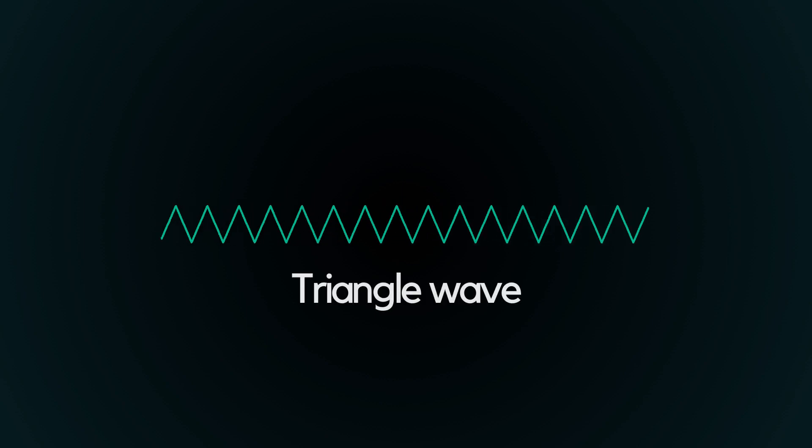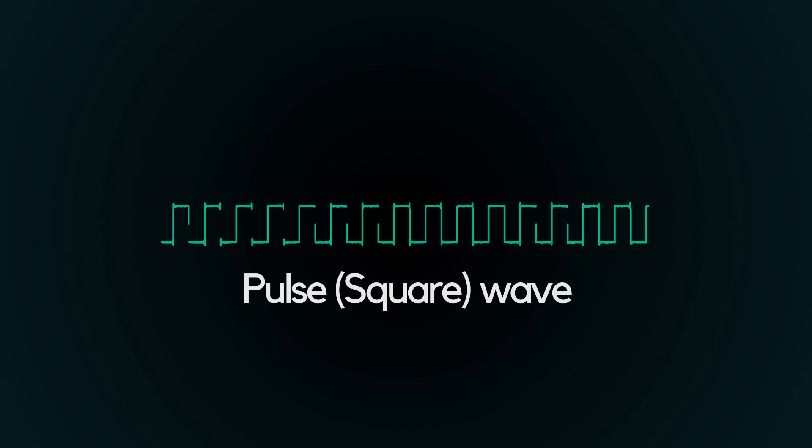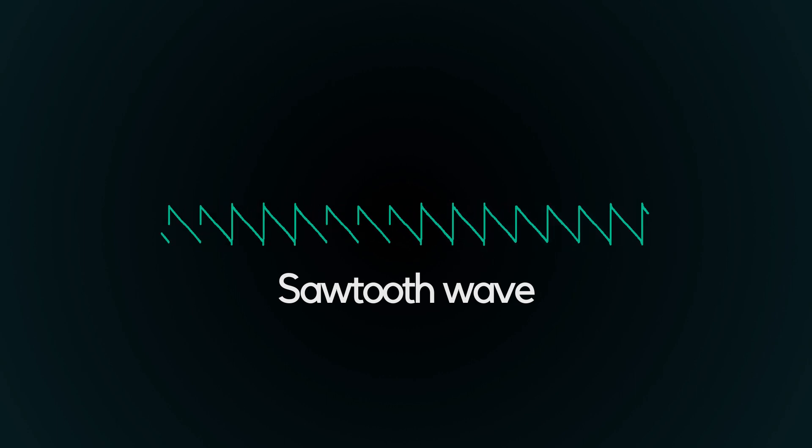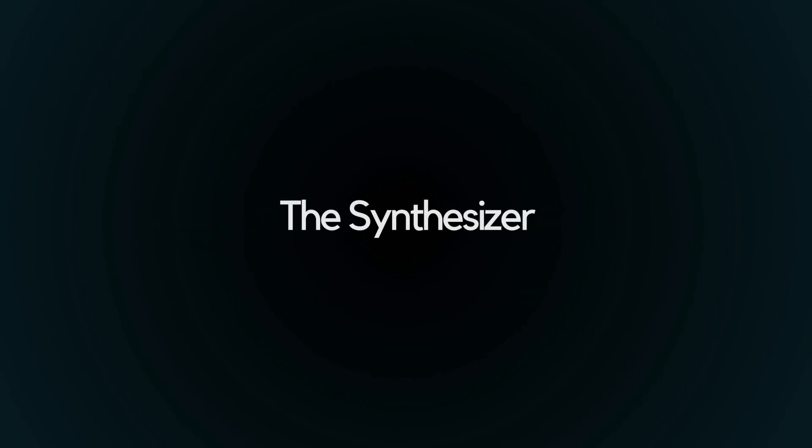Now there are a few other types of waveforms as well. We have a triangle, pulse or square, sawtooth, and any others that can be thought up.